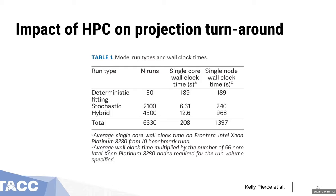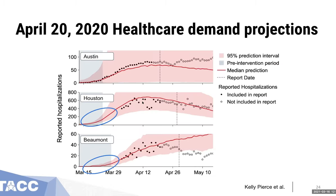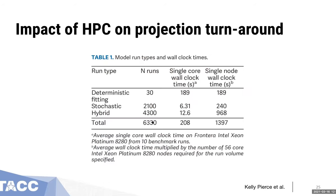This table comes out of the paper where we published the previous figure. Putting together these three reports — one for Austin, one for Houston, and one for Beaumont — required something like 6,300 runs of this model. We were able to iterate on that really quickly because we were using HPC and were able to transfer some of the development and optimization load over to TAC. Each model set took about two hours to run, and it did help to be able to move through this quickly.